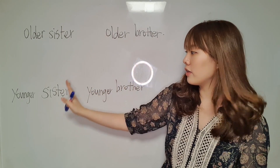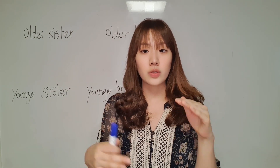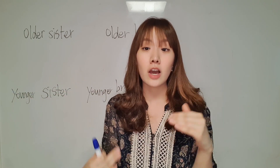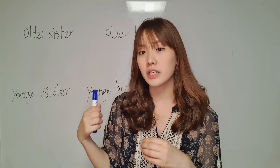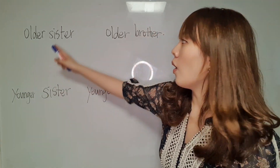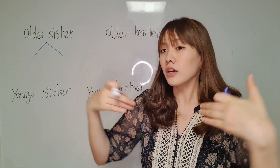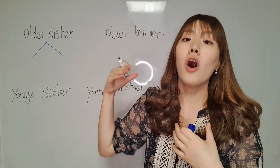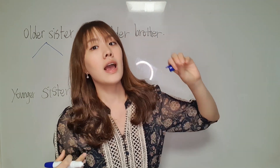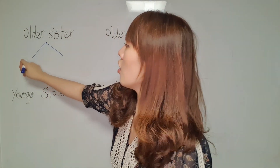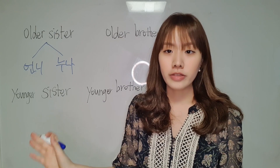Older sister, older brother, younger sister, younger brother. In Korean, we really care about age, so there are different words. Older sister: if you're a girl, you call her 언니; if you're a boy, you call her 누나. So there is 언니 and 누나.